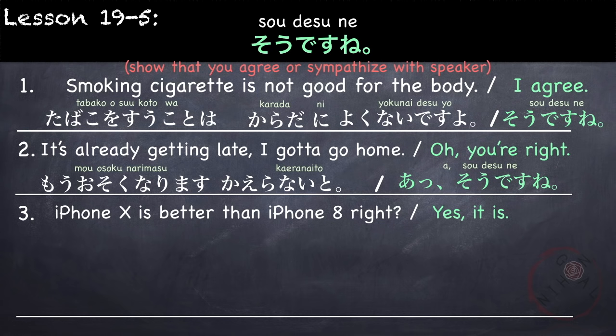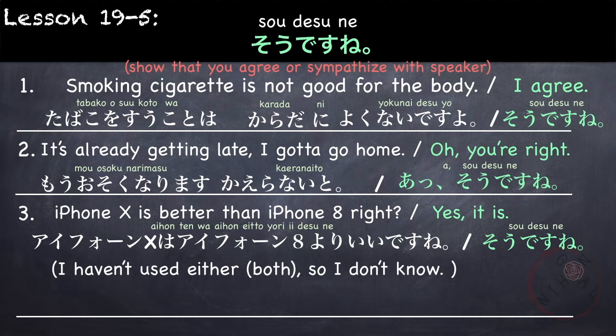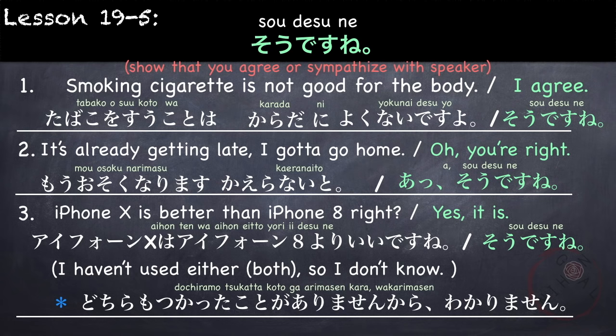And last example: iPhone 10 is better than iPhone 8, right? Aiphone ten wa Aiphone 8 yori ii desu ne. If you agree, you can say sou desu ne. Or: I haven't used either, so I don't know. Dochira mo tsukatta koto ga arimasen kara wakarimasen. Sou desu ne can also be used as a filler, just like let me see or mmm. For example: what do you want to eat? Nani ga tabetai desu ka? Sou desu ne... keeki ga tabetai desu.